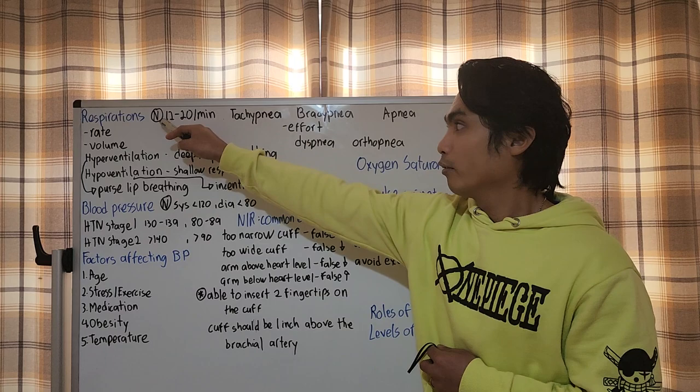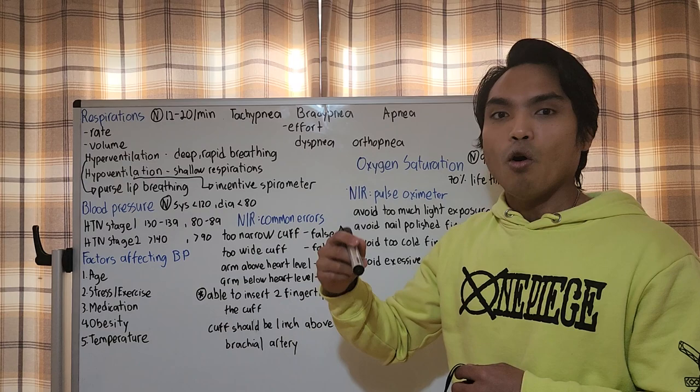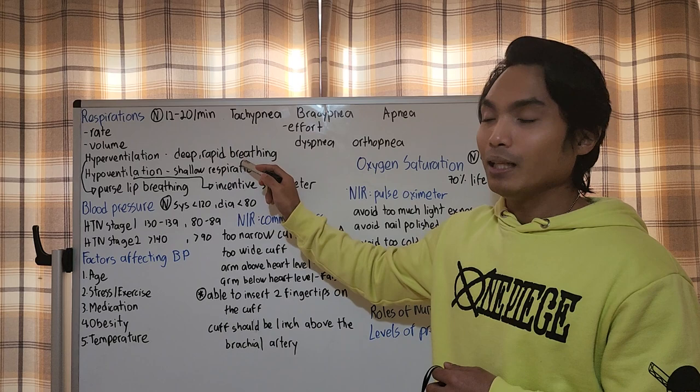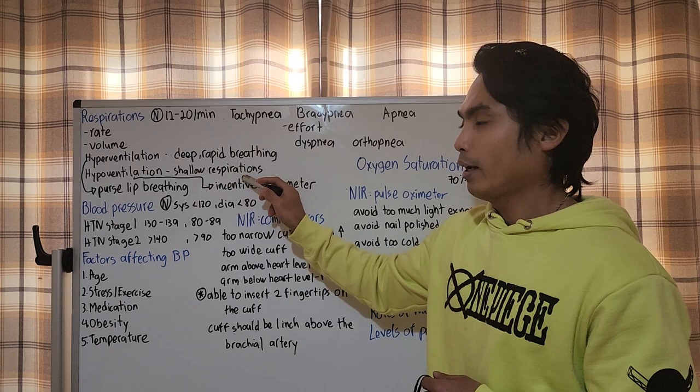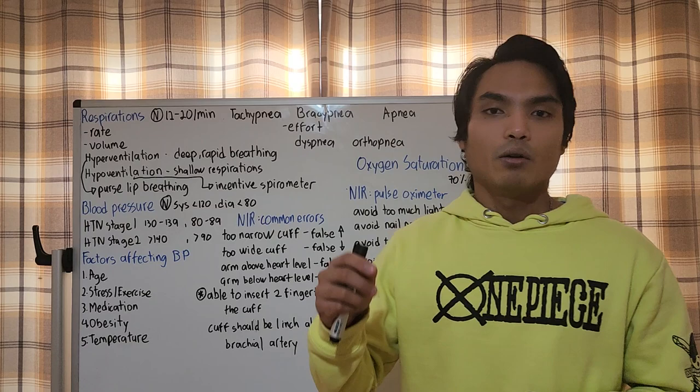For respiration, we assess the rate if it's within 12 to 20. The volume - is the patient hyperventilating or hypoventilating? Hyperventilating is deep, rapid breathing. Hypoventilation is the opposite, shallow respirations.